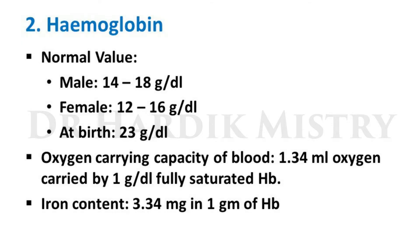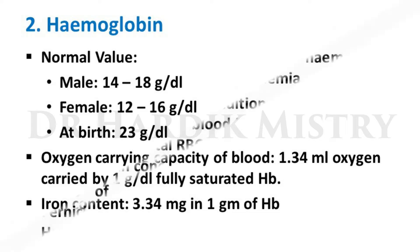Hemoglobin: normal value in male 14 to 18 gram per dL; in female 12 to 16 gram per dL; at birth 23 gram per dL. Oxygen carrying capacity of blood: 1.34 mL oxygen carried by 1 gram per dL of fully saturated hemoglobin. Iron content: 3.34 mg in 1 gram of hemoglobin.